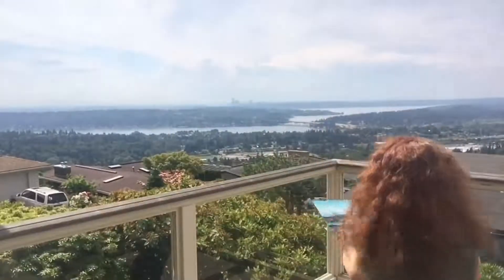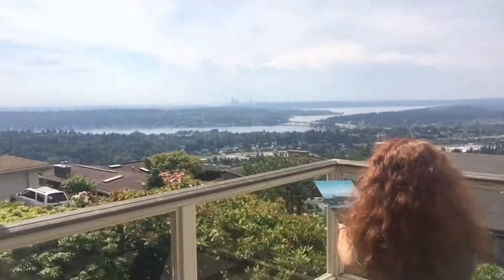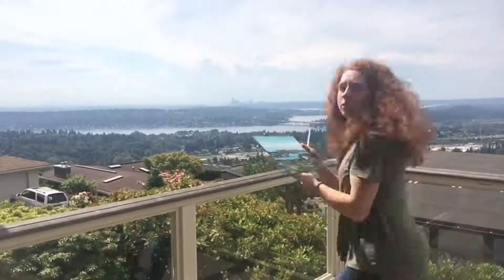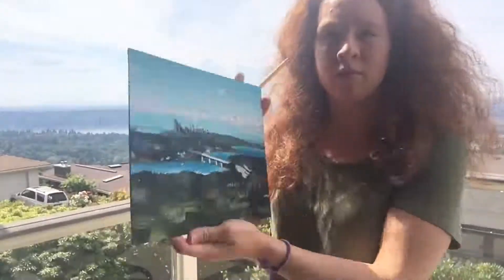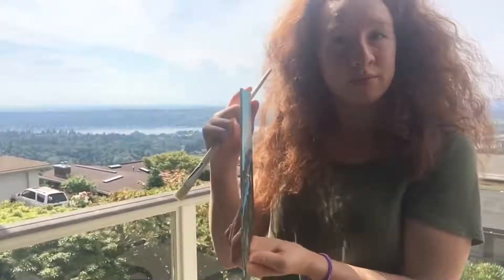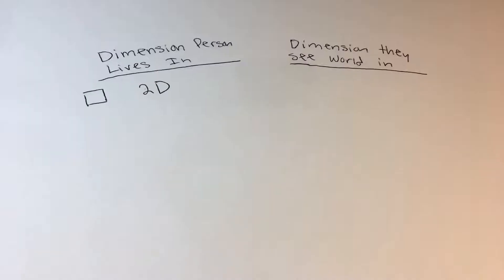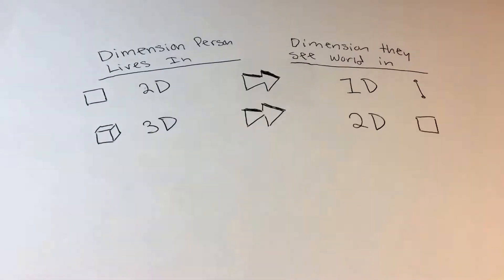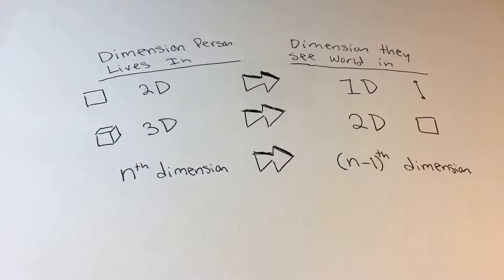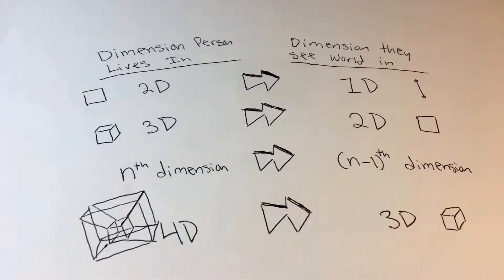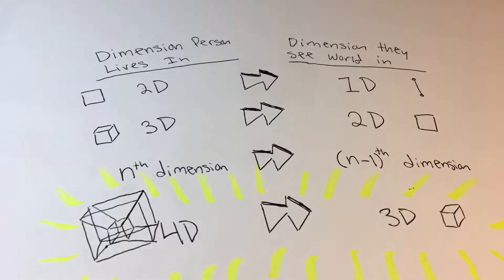Jumping into 3D, everything that we look at in our world is just a 2D image. Don't believe me? Try this: sit down and paint everything you see, then look at your painting edge-on — it's two-dimensional. So a 2D world is seen in one dimension, and a 3D world is seen in two dimensions. That means a 4D world must be seen in three dimensions.